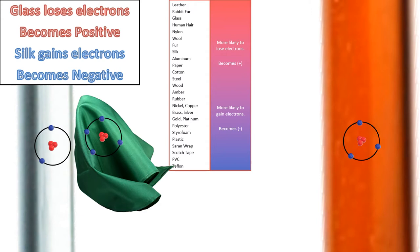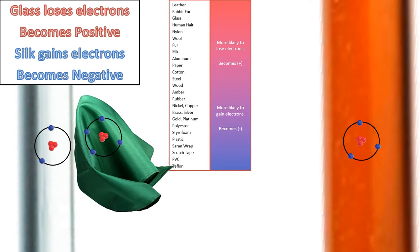Pause the video and see if you can make sense of how the amber is going to work with the silk. Find it on the triboelectric series — what do you predict will happen in terms of the movement of electrons? Silk is higher on the series, so it's more likely to give its electron to amber. If silk loses an electron, the silk is going to become positive, and the amber becomes negative.